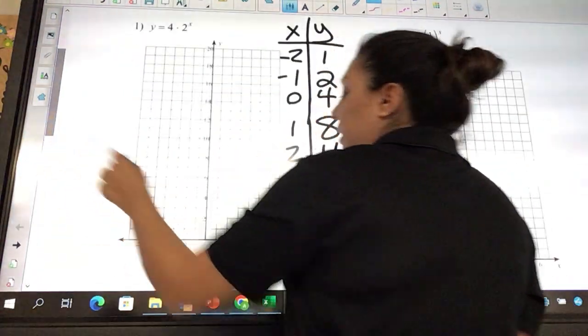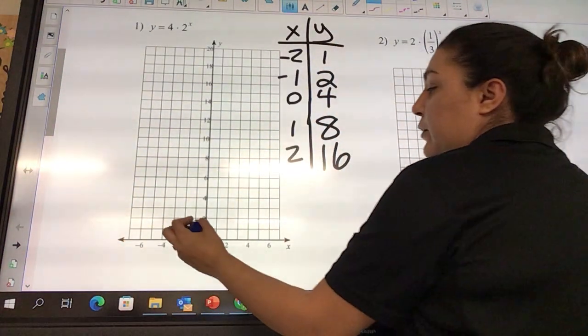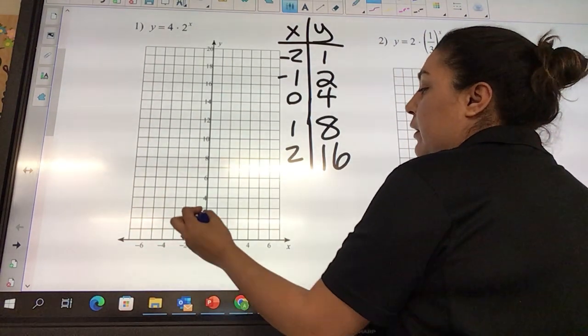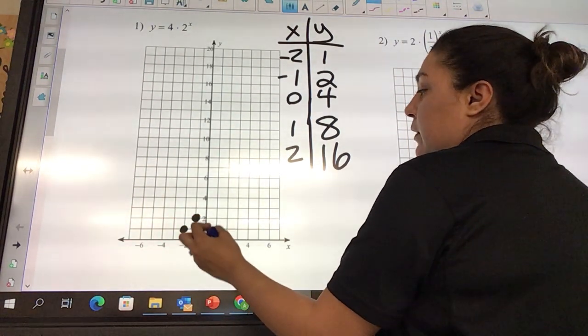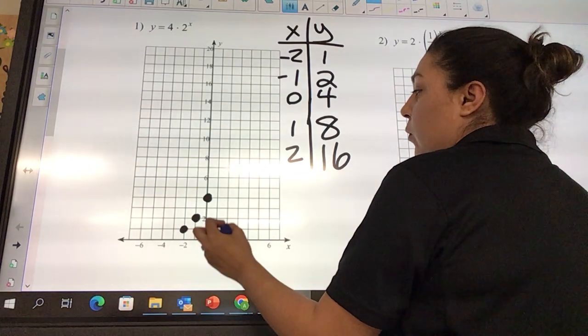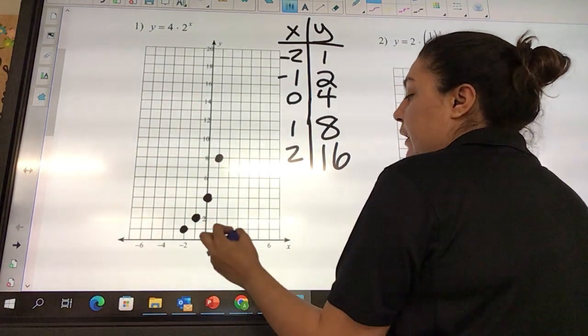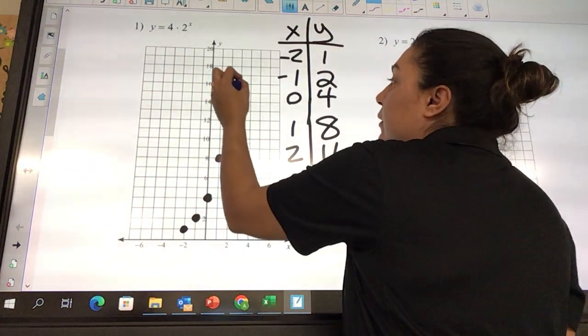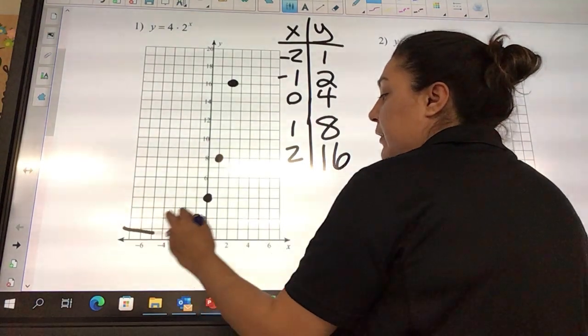So you're always going to start here at the negative 2. So negative 2, 1, negative 1, 2, 0, 4, 1, 8, and 2, 16. And then we're going to connect our dots.